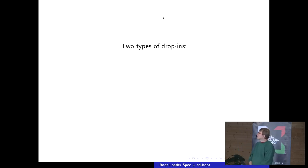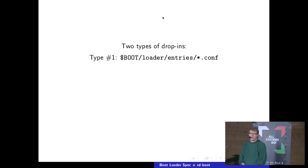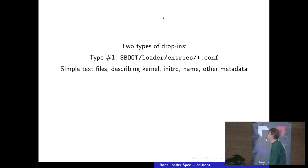Let's have a closer look at these drop-ins. Each drop-in defines one entry in the bootloader menu. There are two types. Type 1 is a config file — these config files just define a kernel, an initrd, a boot title, a version, and then a boot menu entry is created from that. Simple text files describing the kernel, initrd name, and other metadata.